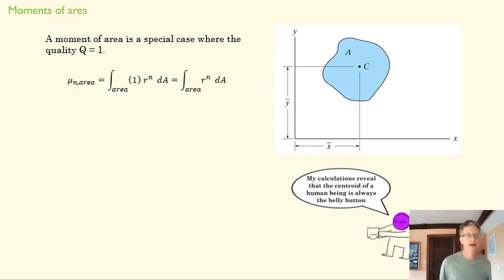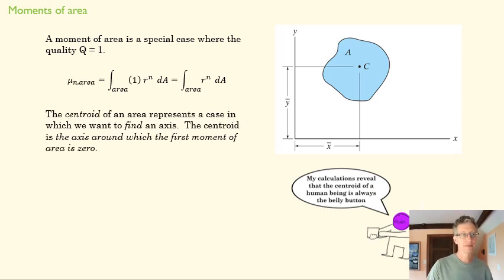So the moment of area is a special case where the quality Q is just one. And what we're doing is finding the sum, the integral of the area at any given point times the distance of that area from some axis. Okay, one example of that is this is a centroid.